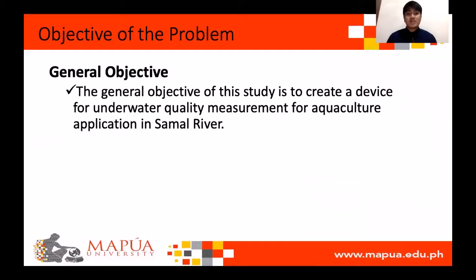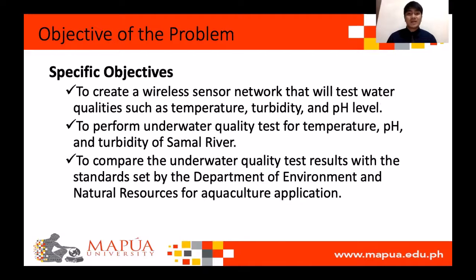The general objective of this study is to create a device for water quality measurement for aquaculture applications in Samuel River. More specifically, this device is intended to help provide three water quality parameters such as temperature, pH level, and turbidity of Samuel River. These parameters are to be compared with the standards set by the Department of Environment and Natural Resources for aquaculture applications.